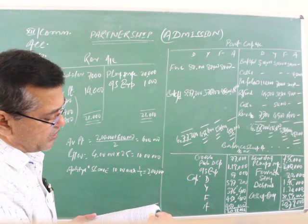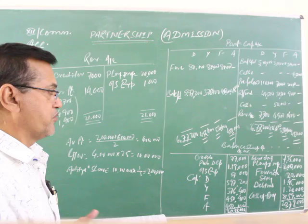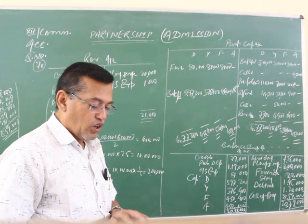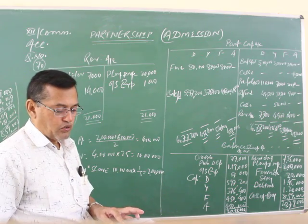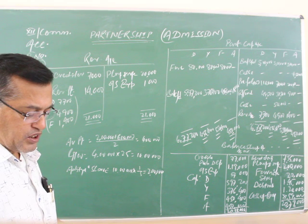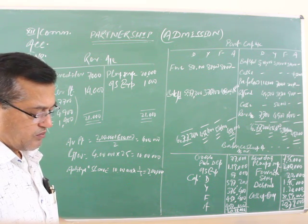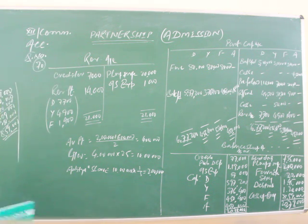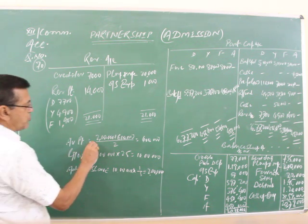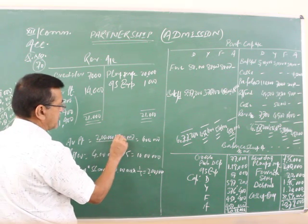And necessary amount for goodwill on the following terms. Regarding the goodwill it has been given there. Goodwill of the firm is to be evaluated at two and a half years purchase or 2.5 years purchase of the average profit of last two years. Last three years profit given, but you have to consider only last two years profit: two lakhs and six lakhs.